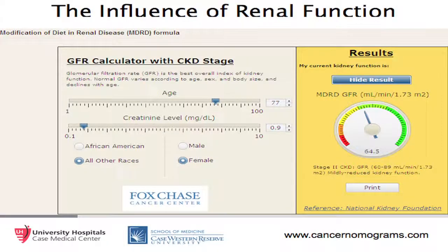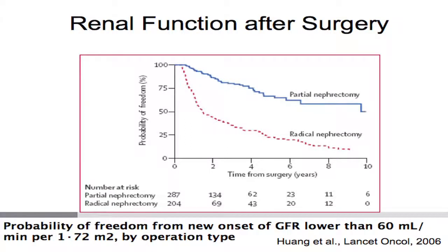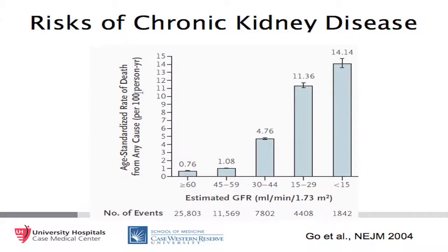Regarding the influence of renal function on decision making, we can estimate her GFR using the MDRD formula, which gives an estimated GFR of 64.5. Partial nephrectomy will preserve more kidney function than radical nephrectomy, both in the short term and the long term. We know that chronic kidney disease is related to all-cause mortality, with increasing mortality as GFR decreases.